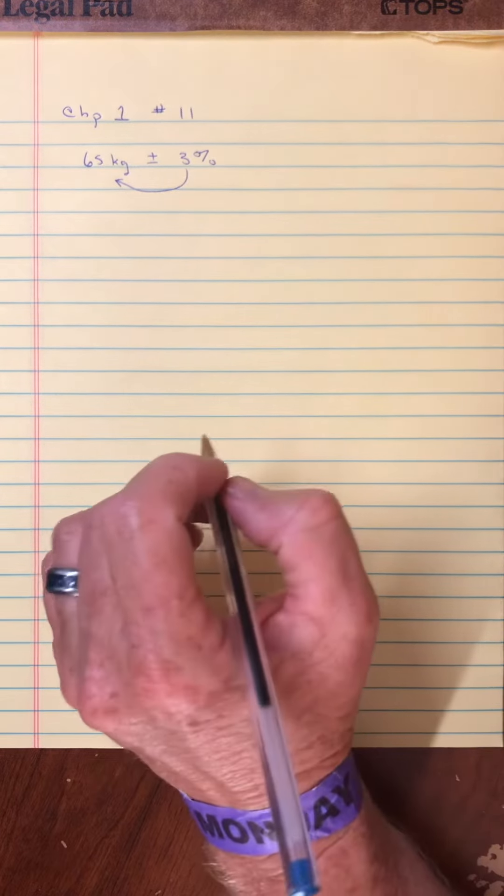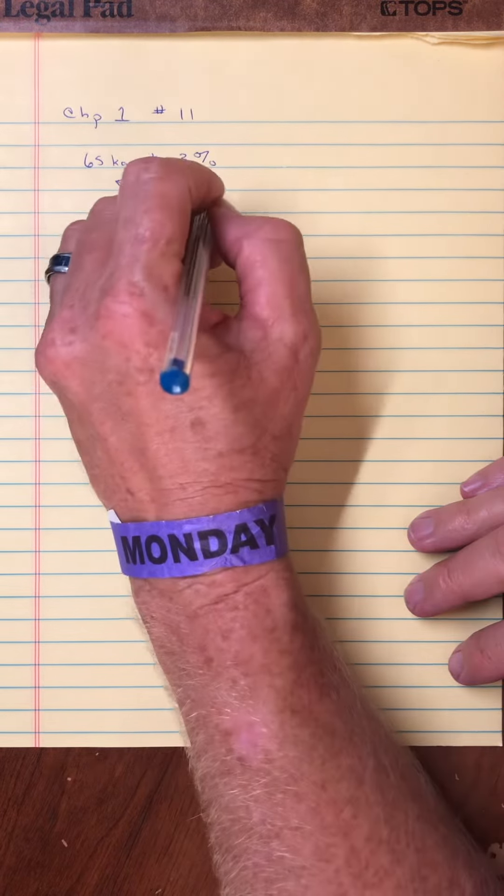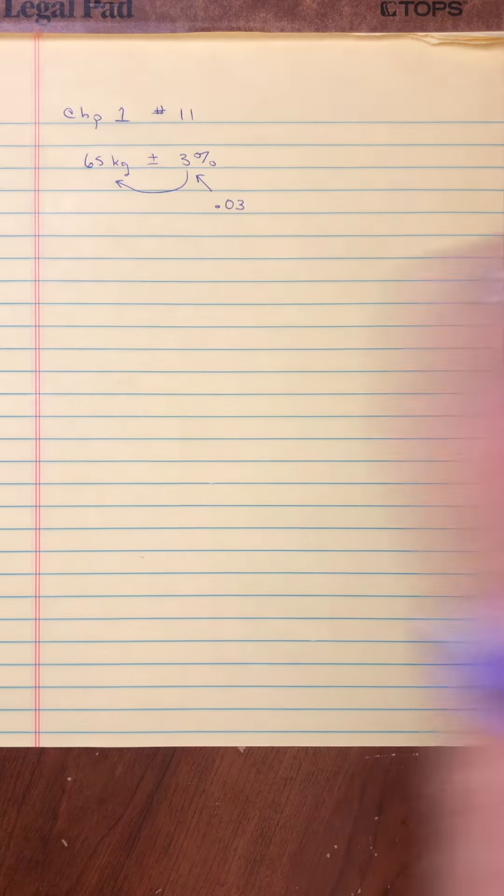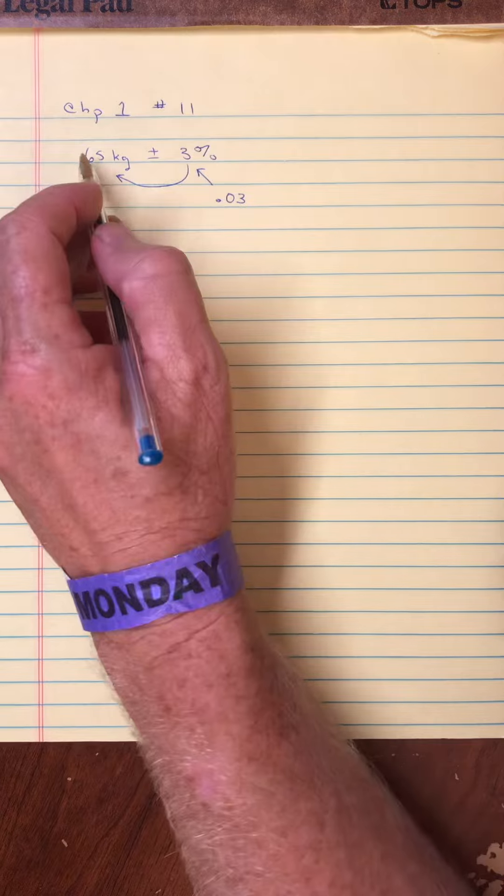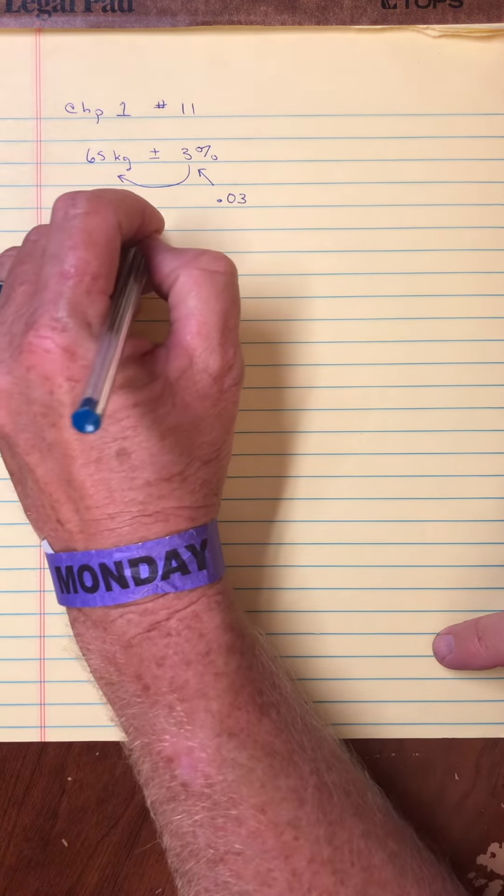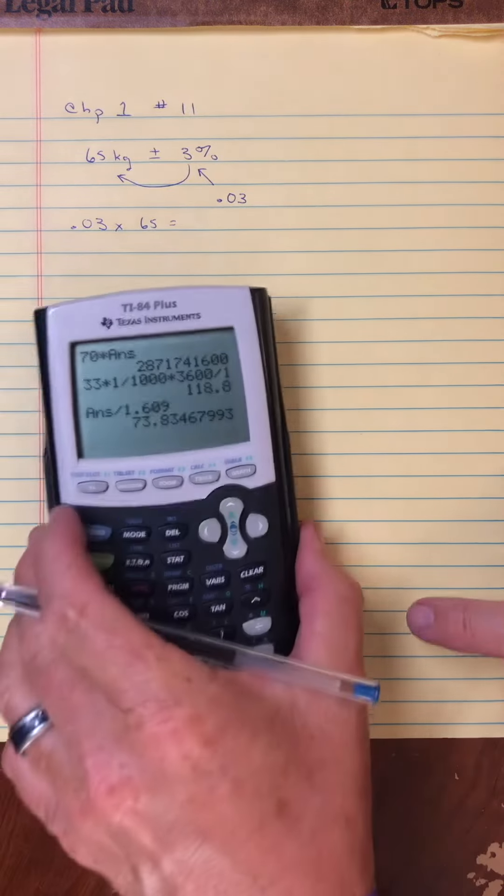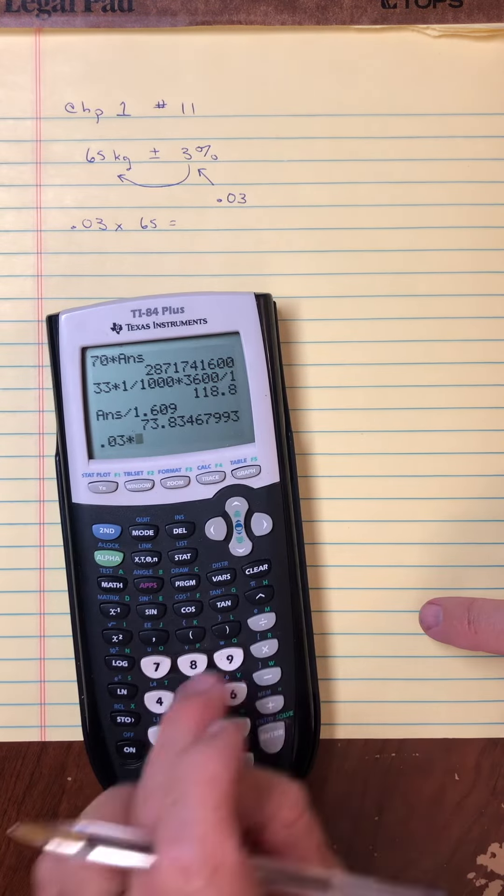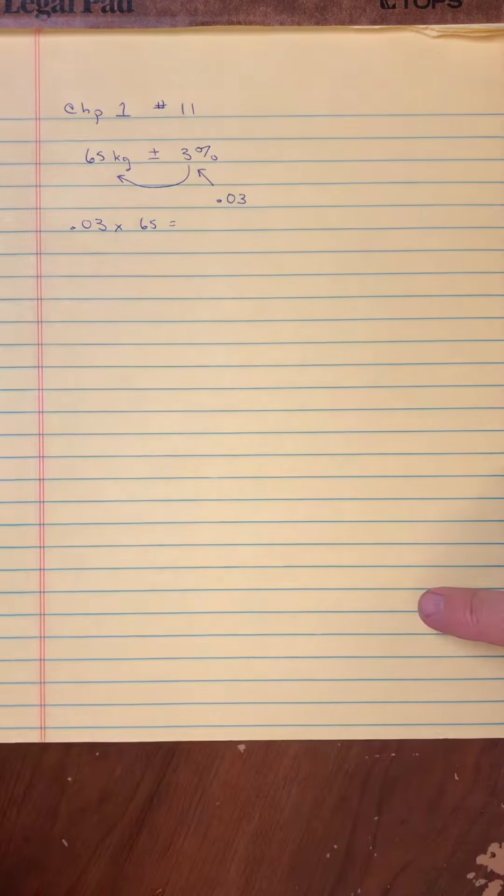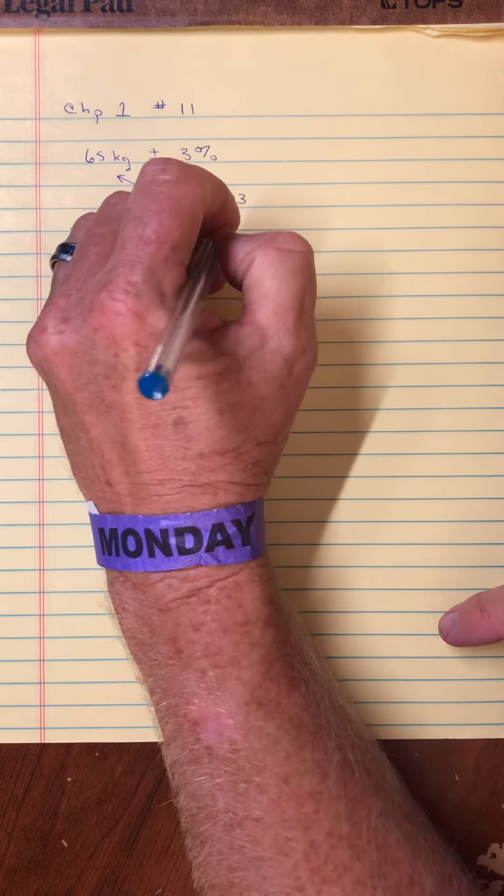So maybe a quick math review. 3% means 0.03 in terms of a fraction. So it's 0.03 of 65. So 0.03 of 65 is what? 0.03 of 65 is about 1.95.